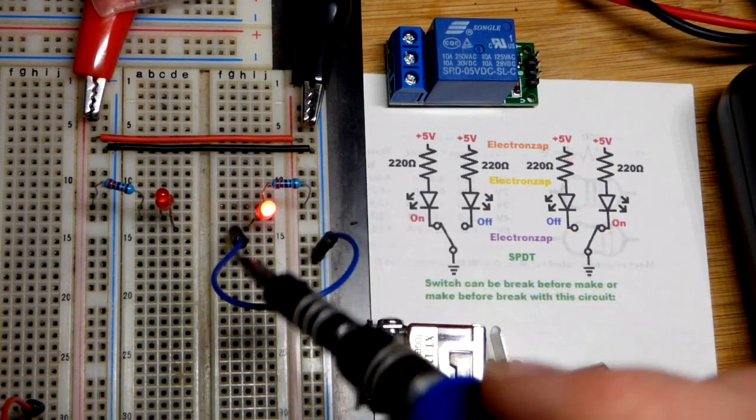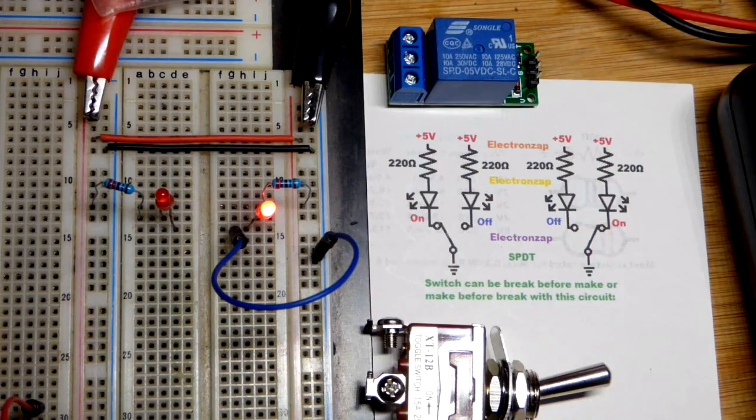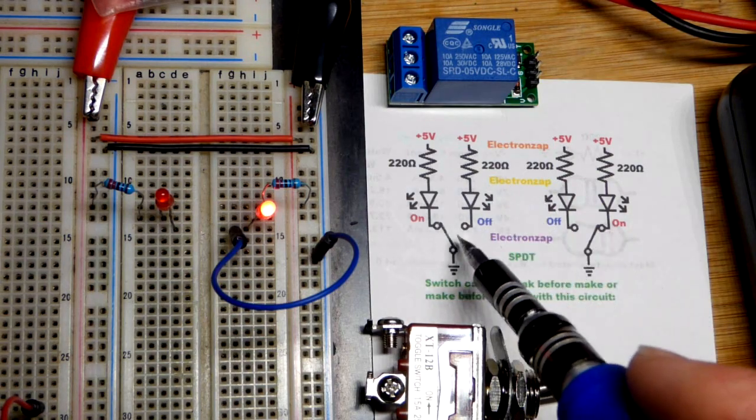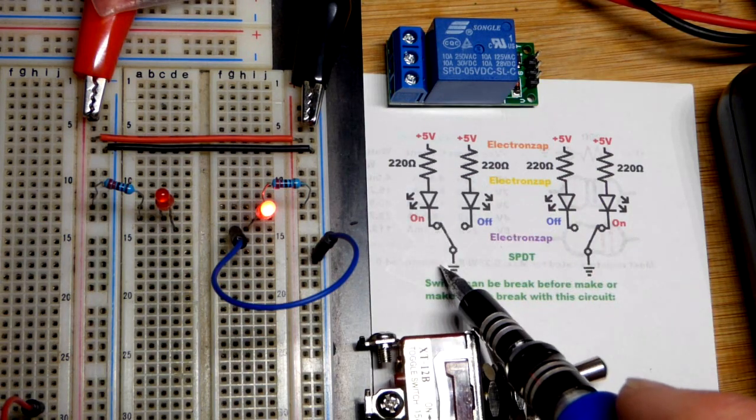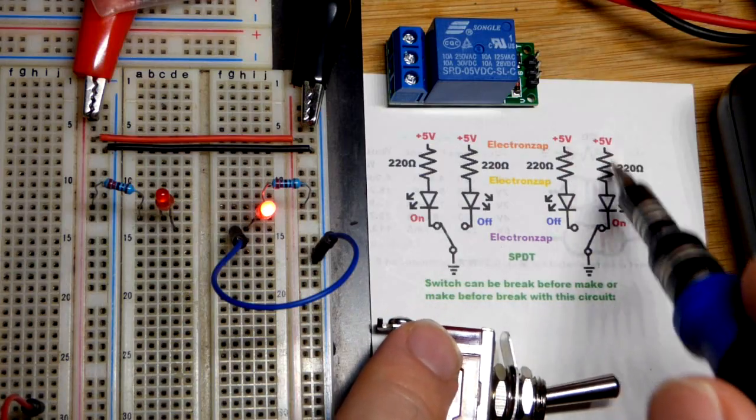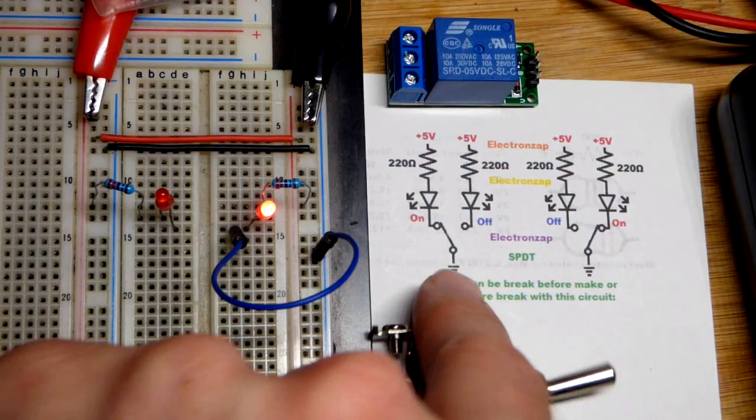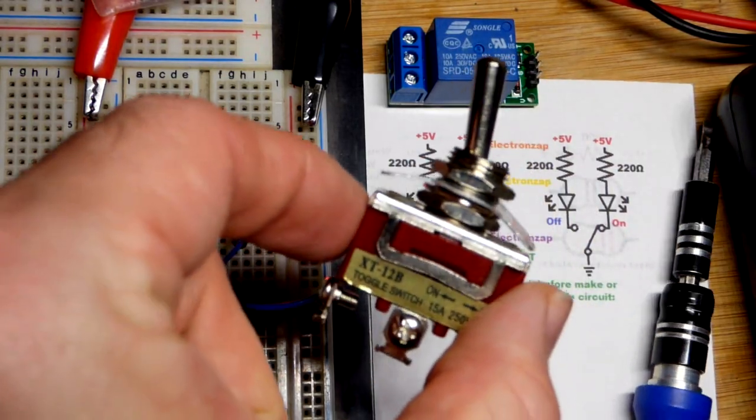But then when you get it into the final position it will be connected to just the one. So in this case we can either have the left side on or we can have the right side on the way we have it wired up. And that's the way that this switch works.